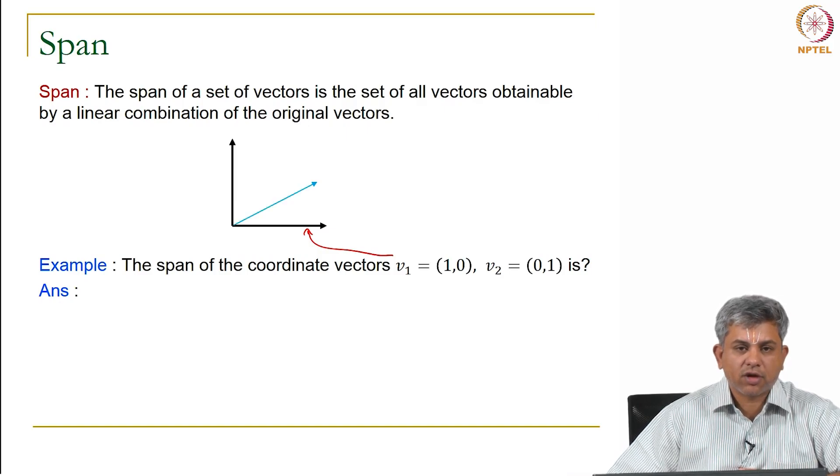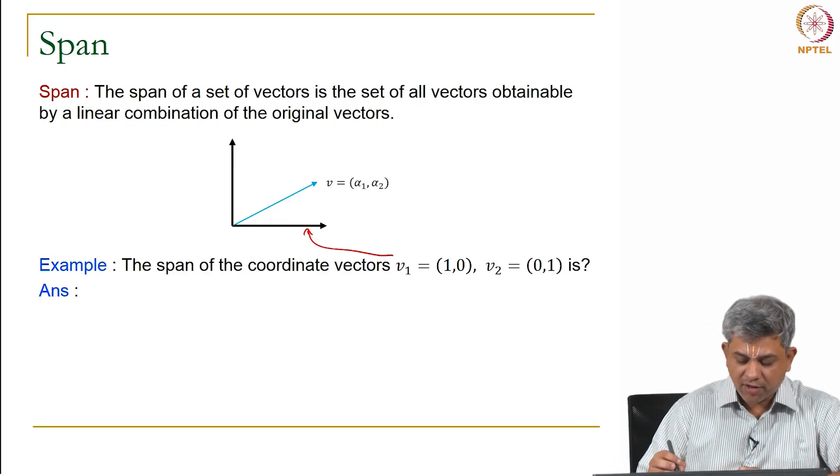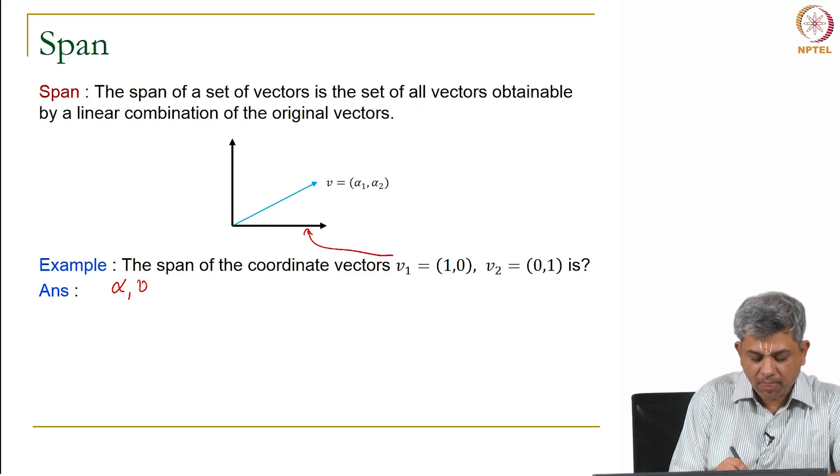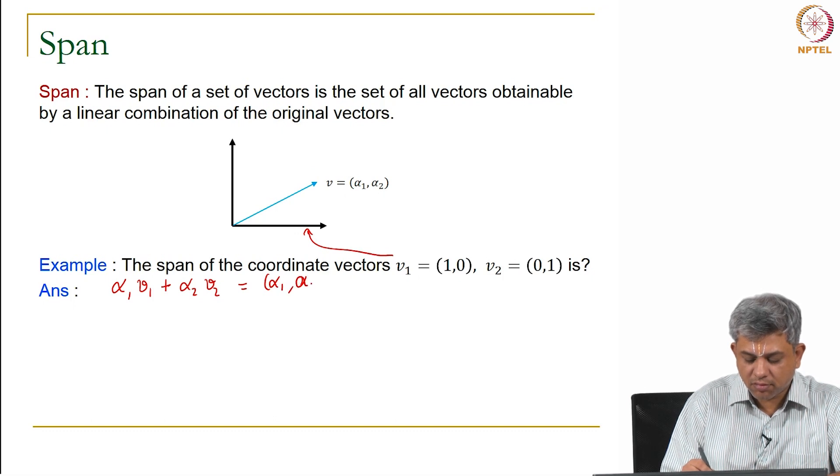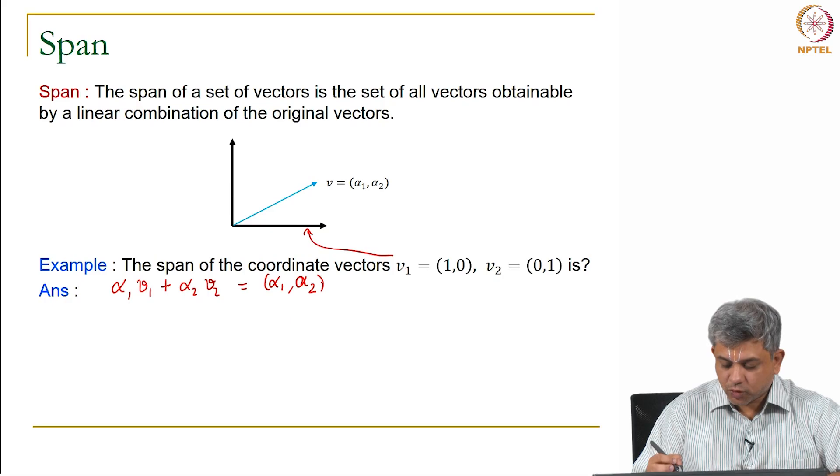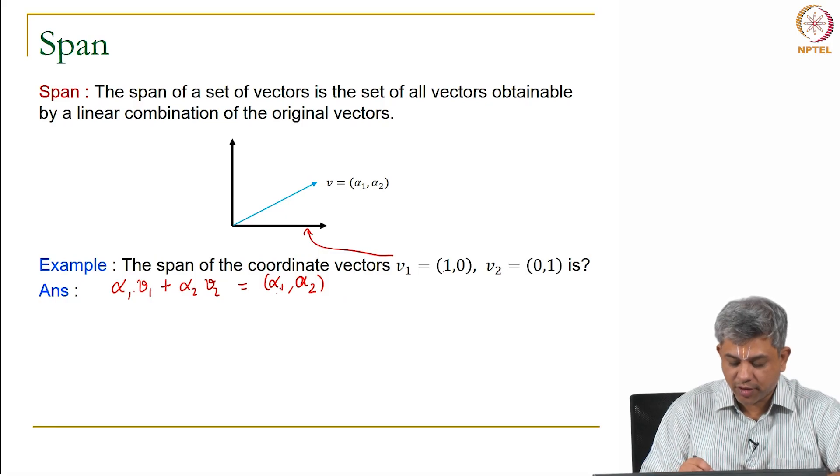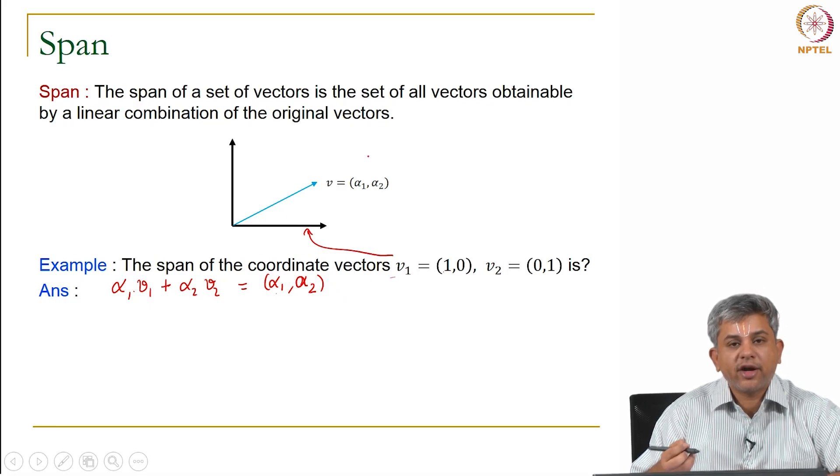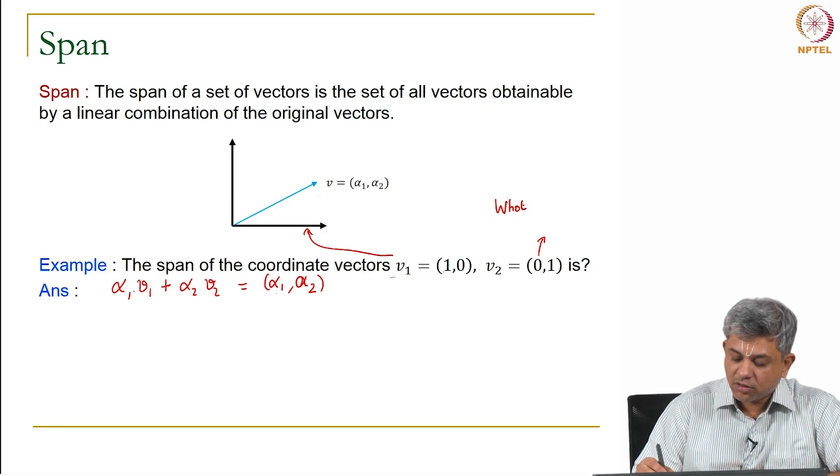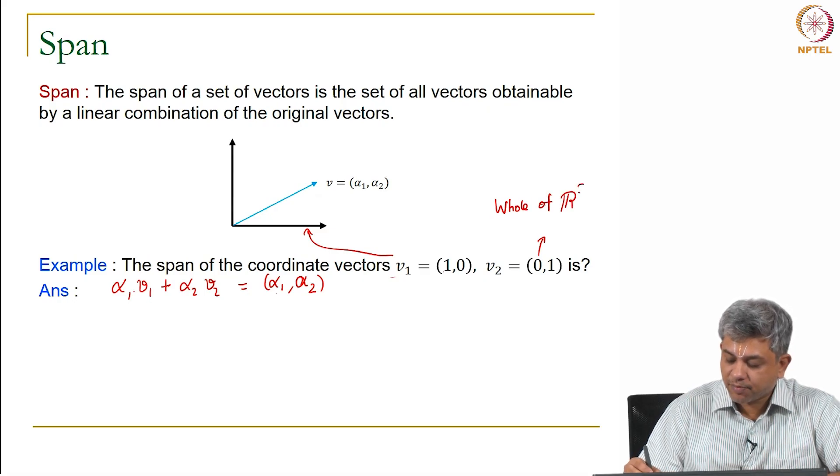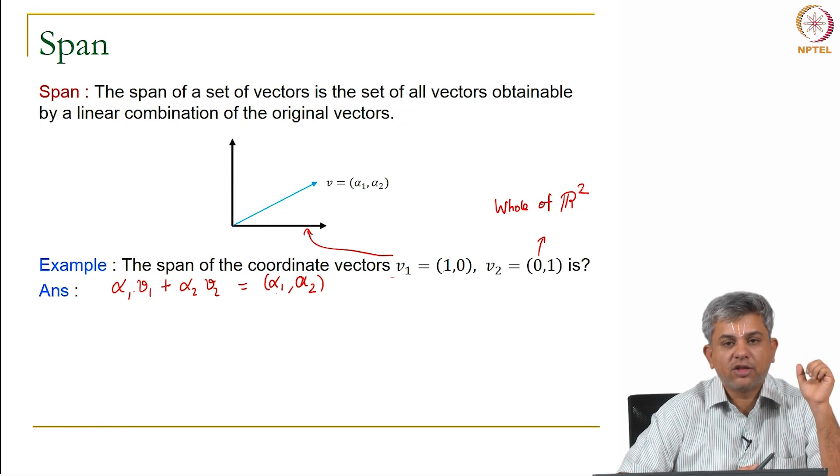Any vector that you have, say [α1, α2], is α1·V1 + α2·V2, because α1 times (1,0) is going to be (α1, 0), and α2 times V2 is going to be (0, α2). You can add these two and get any vector. What it means is the span of the coordinate vectors is the whole of two-dimensional space, the whole of R².